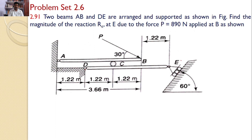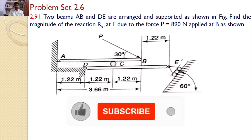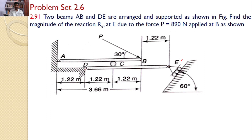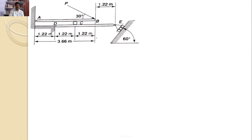Our interest is to find the reaction force at E. For that, we will consider the free body diagram of AB first and then the free body diagram of DE. By considering the free body diagram of AB, I can find the reaction at C. The same reaction is acting on D, and upon knowing the reaction at C, by considering the free body diagram of DE, I can find the reaction at E.